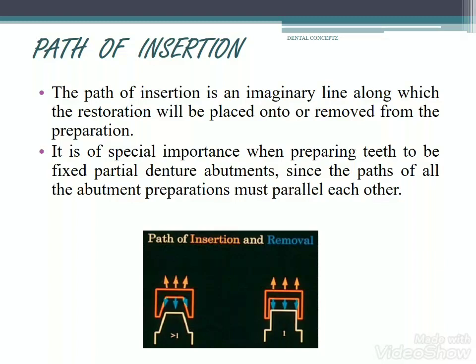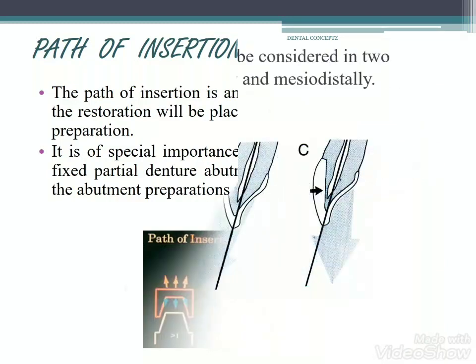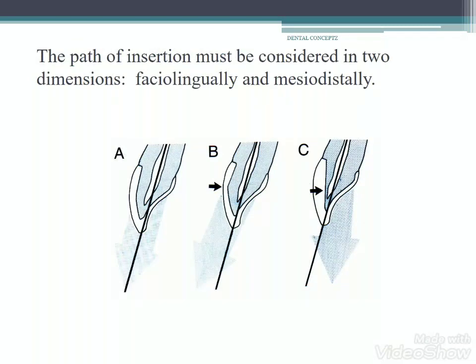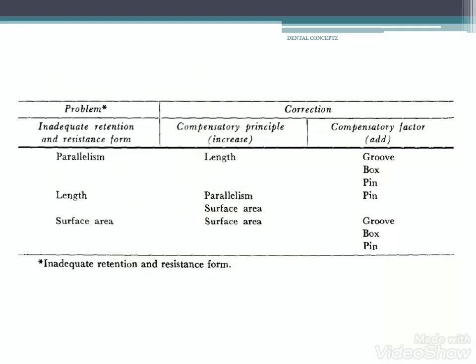The path of insertion is an imaginary line along which the restoration will be placed onto or removed from the preparation. It is of special importance when preparing teeth as fixed partial denture abutments, since the paths of all the abutment preparations must be parallel to each other. The path of insertion must be considered in two dimensions: faciolingually and mesiodistally. If the preparation is not parallel enough, we can compensate by increasing the crown length or by adding compensatory features like grooves, box forms, or pins. If length is not adequate, retention can be increased by maintaining parallelism, increasing surface area, or adding compensatory factors like pins.